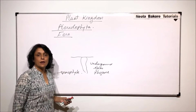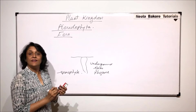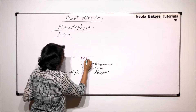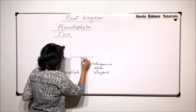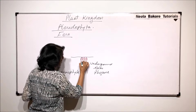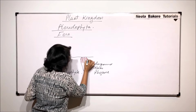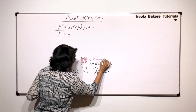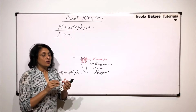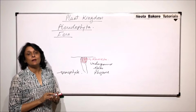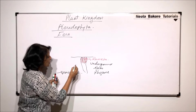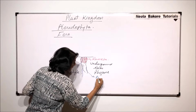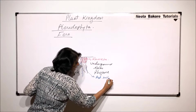This underground stem is called the vertical rhizome, and it is covered with scales. These scales are called the ramenta. The roots arise from the stem, meaning they are adventitious roots, so we find these adventitious roots arising from the underground rhizome.